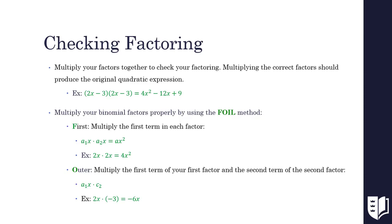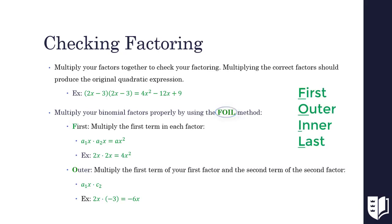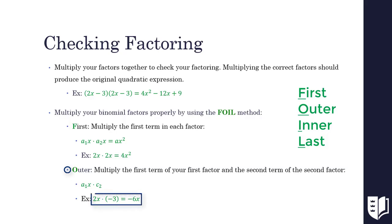Now that we know how to factor different quadratic expressions, we need to go over how to make sure we got the right answer. We check by multiplying our factors together — they should give us our original quadratic when we're done. The easiest way to multiply our binomial factors correctly is to use the FOIL method. FOIL stands for First, Outer, Inner, and Last. We start by multiplying the first term in each factor: in our example, 2x and 2x multiply to get 4x squared. Next, we multiply our outer factors, which are the first term of our first binomial and the second term of our second binomial. In our example, the outer factors 2x and negative 3 multiply to give negative 6x.